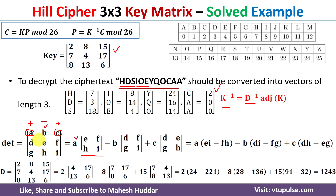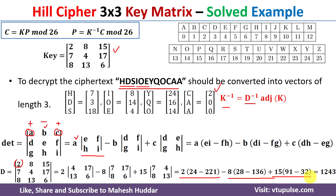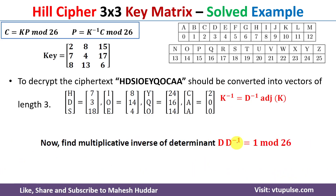Applying this to the key matrix: for the first element 2, we compute 4×6 − 13×17. For element 8, we compute −(7×6 − 8×7). For element 15, we compute 7×13 − 4×8, and so on. Once you simplify these equations, the determinant of the key matrix is 1243.